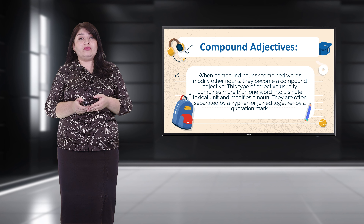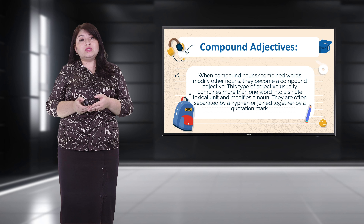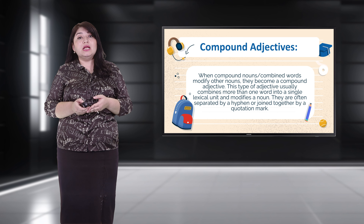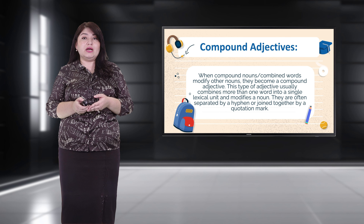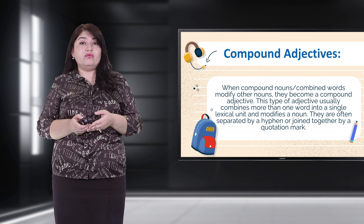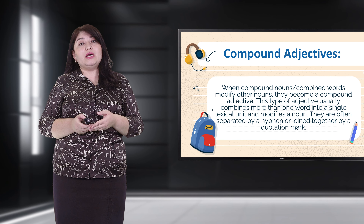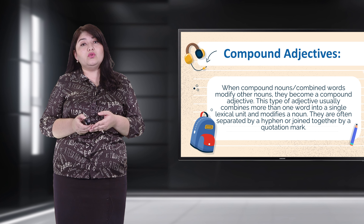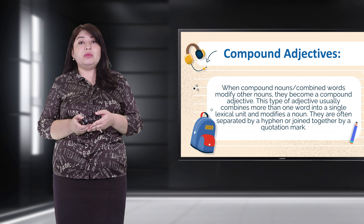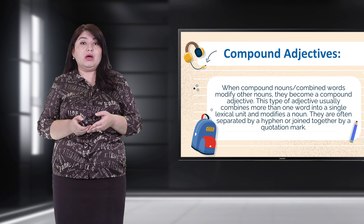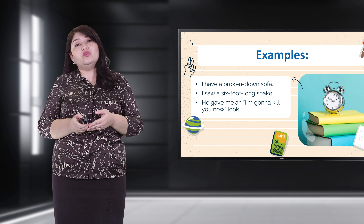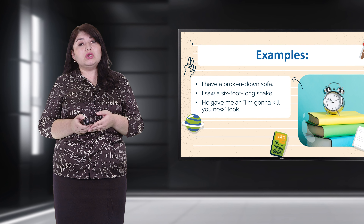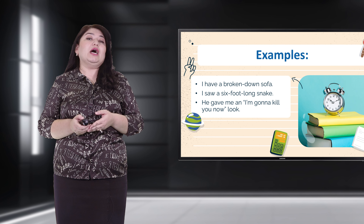Compound adjectives occur when combined words modify other nouns. This type of adjective usually combines more than one word into a single lexical unit to modify a noun. They are often separated by a hyphen or joined together. For example: 'I have a broken-down sofa' or 'I saw a six-foot-long snake.'